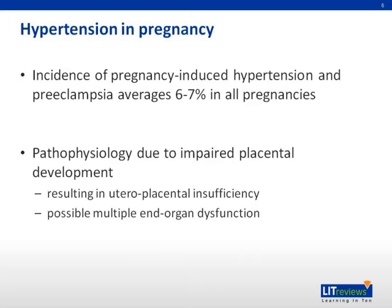The incidence of pregnancy-induced hypertension and preeclampsia averages six to seven percent of all pregnancies. Pathophysiology involves impaired placental development resulting in utero-placental insufficiency and a subsequent spectrum of hypertensive disorders, which may have multiple end-organ involvement.